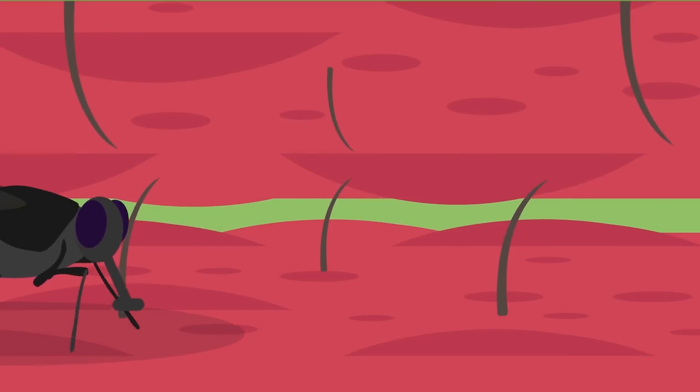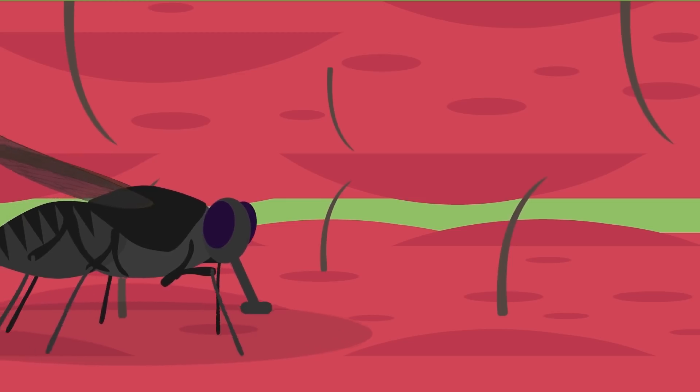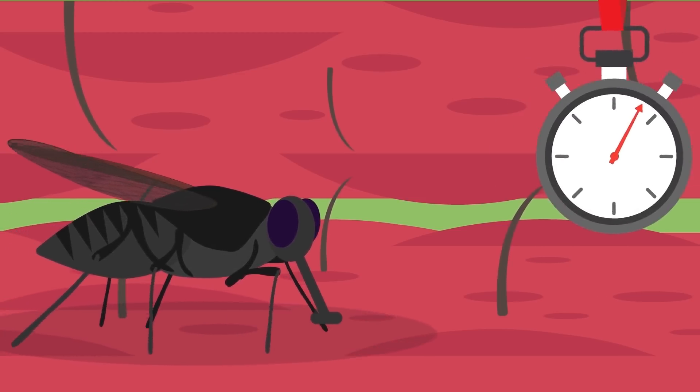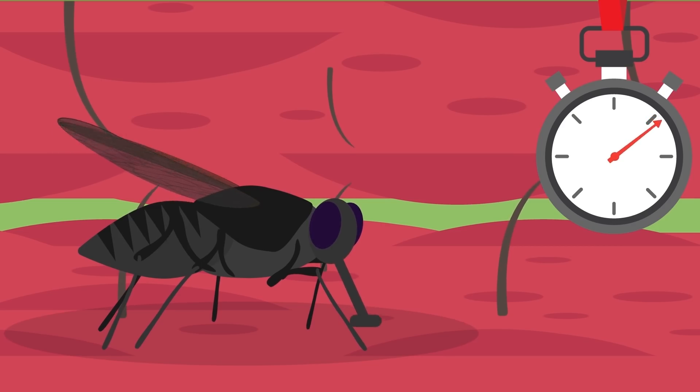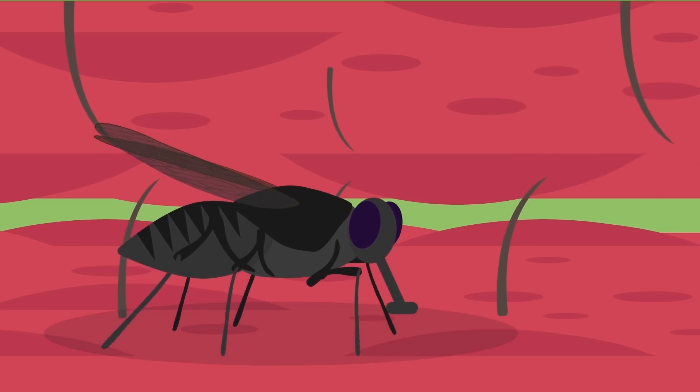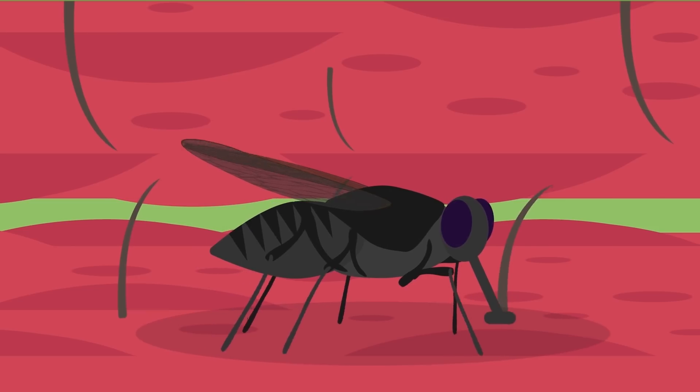The first adaptation is that the trap will only then snap together when two of the hairs are triggered within about half a minute of each other. This keeps the plant from reacting to false alarms like raindrops while still catching most of the animals, which are likely to brush more than one hair.